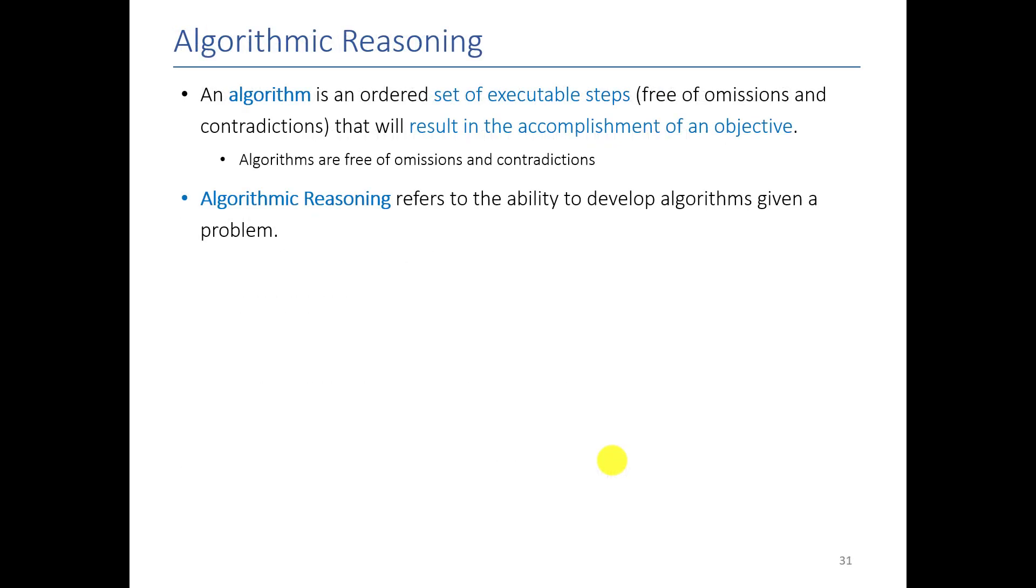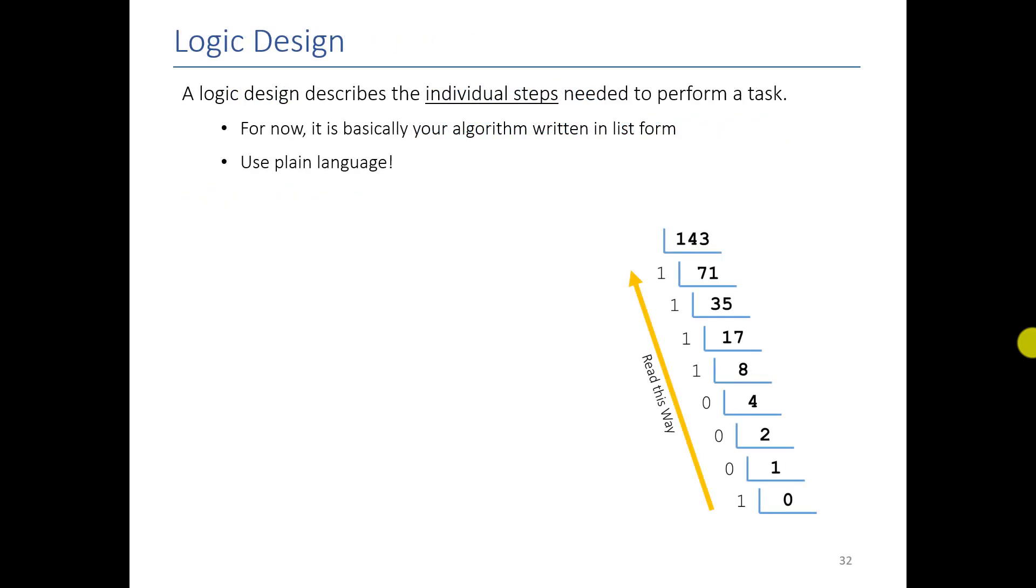And this kind of segues into our final topic for the lesson, which is algorithmic reasoning. With algorithmic reasoning, what we're trying to do is develop a set of executable steps that can result in the accomplishment of an objective. So the important part is that they are free of omissions and contradictions. And the idea here with algorithmic reasoning is that we want to devise generalized algorithms that can solve problems. So not a specific problem, but every type of problem that is similar. So let's say, for example, I wanted you to write an algorithm that converted a decimal number into binary. It's not useful if you just tell me the steps to convert 143 to binary. I want to know for any given number, how would I convert it to binary?